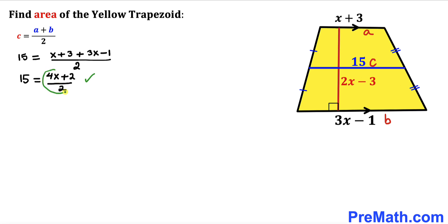This right hand side could be written as 4x divided by 2 plus 2 divided by 2 as a partial fraction. And now 4x divided by 2 is same as 2x plus 2 divided by 2 is same as 1. So therefore this right hand side could be written as 2x plus 1.